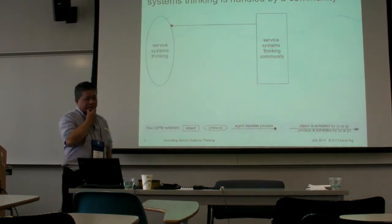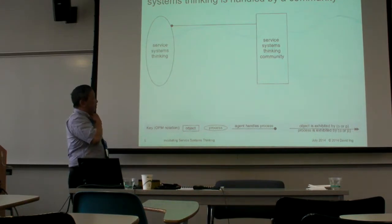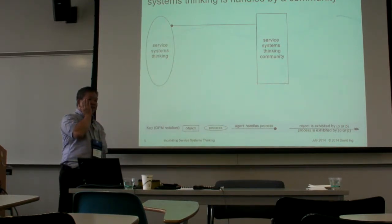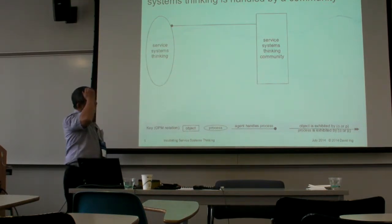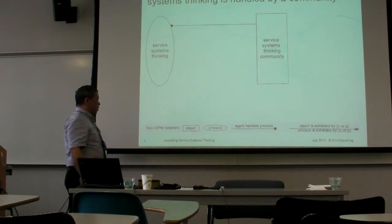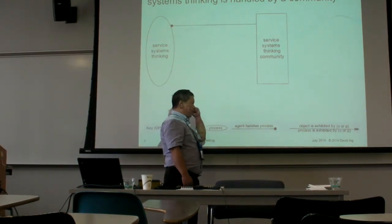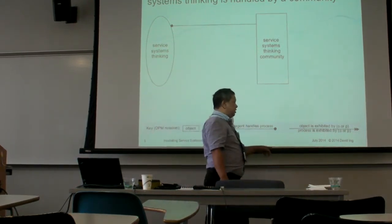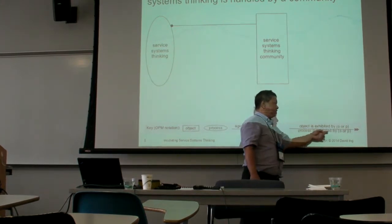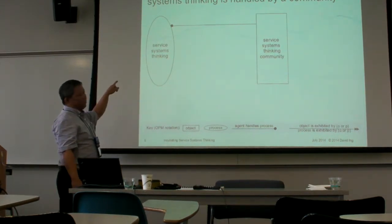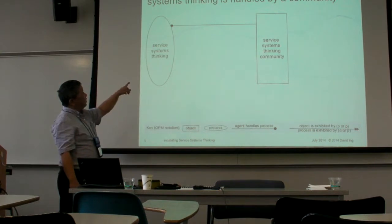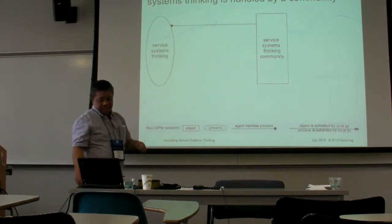In an object process representation, I've been using — I was at the ECOSI International Symposium at the end of June — most of the work at ECOSI has been moving towards SysML, but there is a splinter group that's been working on object process methodology. The notation works as follows: objects are rectangles, processes are ovals, the agent handles the process, and the object is exhibited by another object or process. Service system thinking is a process, and it's handled by a service system thinking 3MD, which is an object.